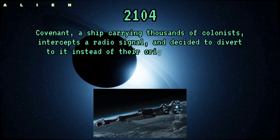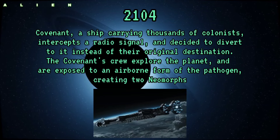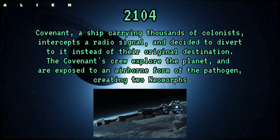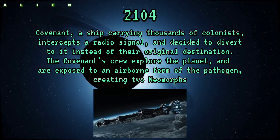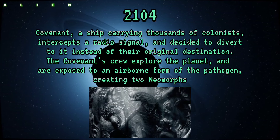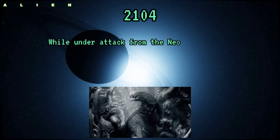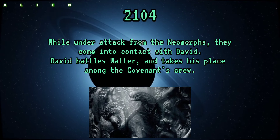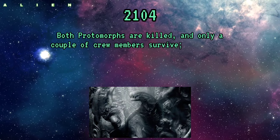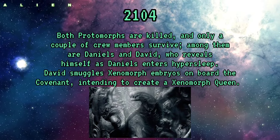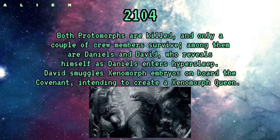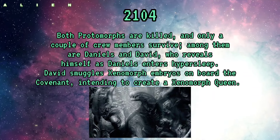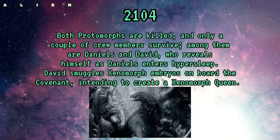2104: The Covenant, a ship carrying thousands of colonists, intercepts a radio signal and diverts to it instead of their original destination. The crew explore the planet and are exposed to an airborne form of the pathogen, creating two neomorphs. While under attack, they come into contact with David. David battles Walter, taking his place among the Covenant's crew. Both protomorphs are killed and only a couple of crew members survive. David reveals himself to Daniels as she enters hypersleep, and smuggles xenomorph embryos on board, intending to create a xenomorph queen.